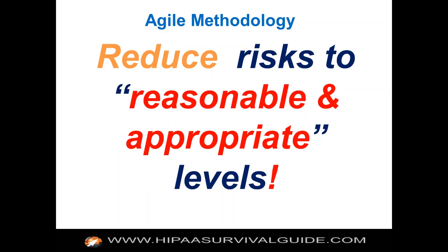We're trying to Katrina-proof your practice — plug enough vulnerabilities that even a Category 5 hurricane hitting your geography means your data and PHI would survive intact, and you could potentially be up and running within a few days. We're trying to reduce risk to levels that are reasonable and appropriate — the words used in the Security Rule. You can't eliminate risk; there's not enough time or money to eliminate it. Reasonable and appropriate depends on factors like your organization's size, resources, and complexity — what the Security Rule captures as the flexibility principle.